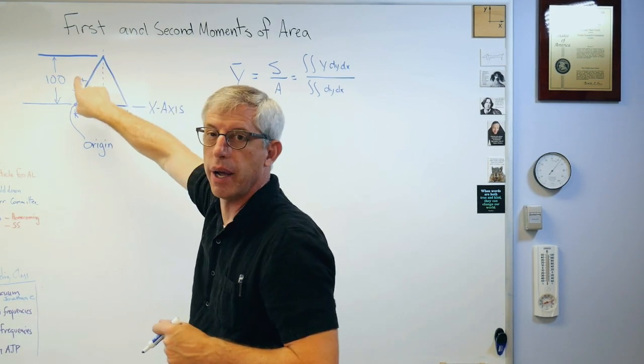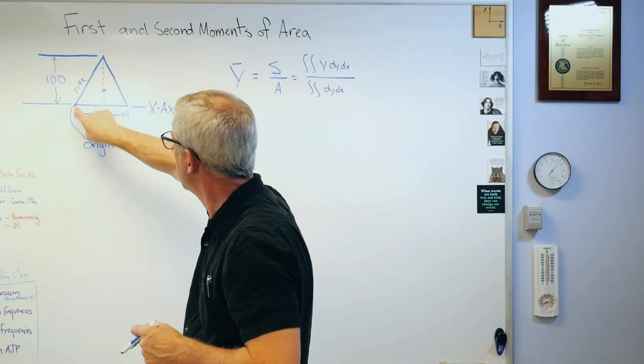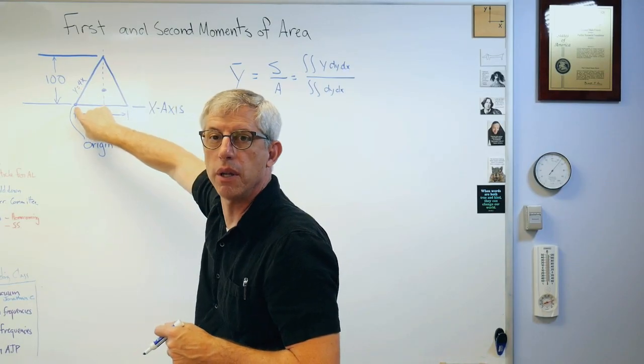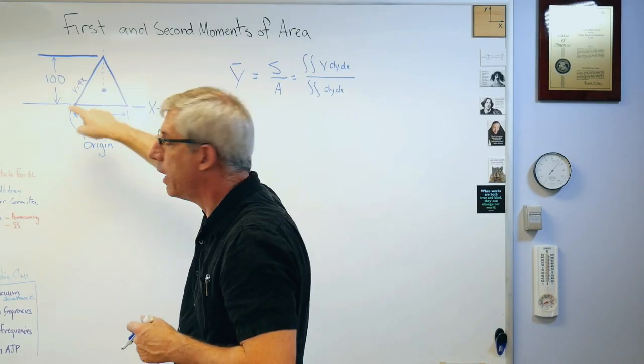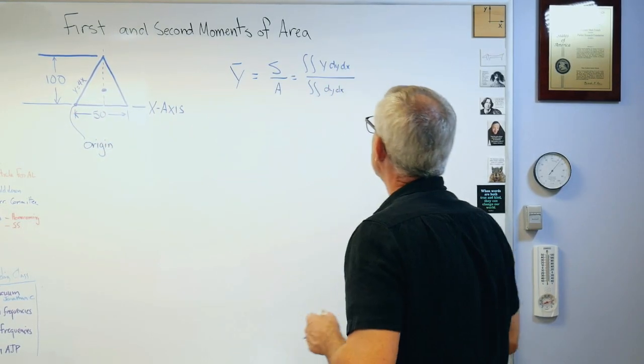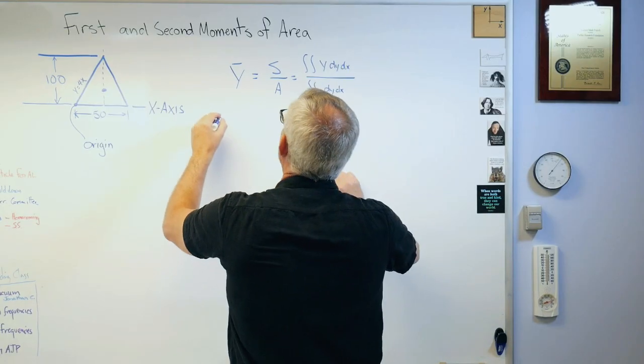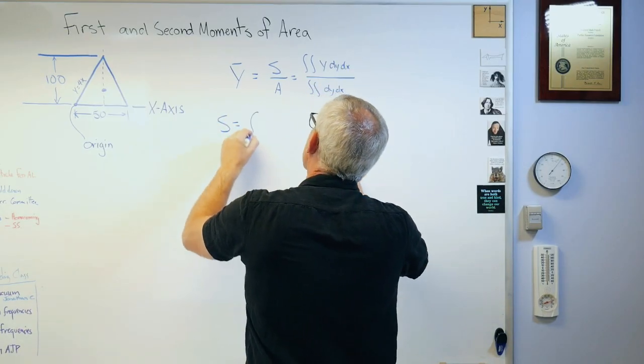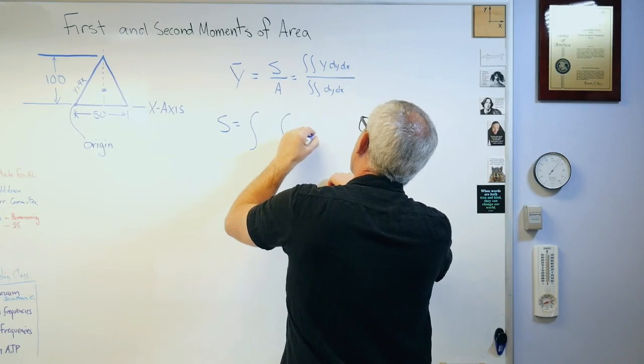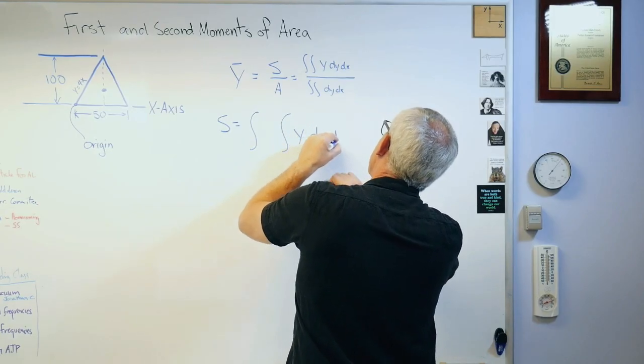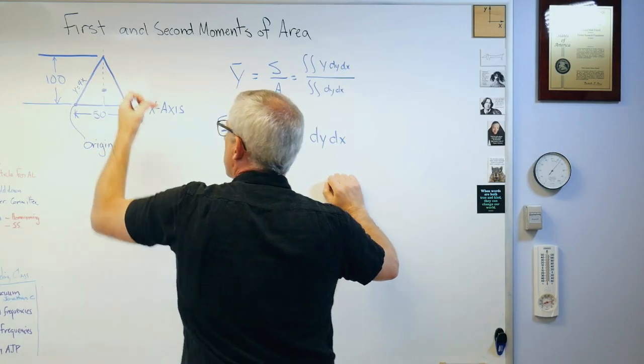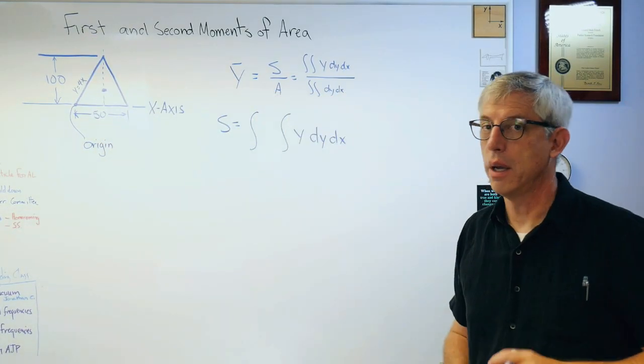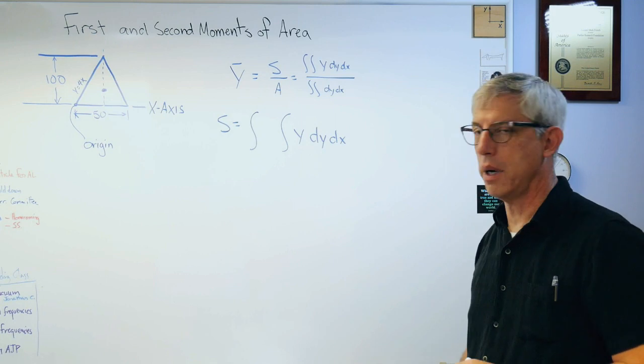The slope of that line there is 4x. And if I happen to call the origin that point right there, then the equation of that line really is just 4x. So here's what I'm going to do. I'm going to figure out s and I'm going to give myself plenty of room here. I'm going to do dy dx because I'm going to integrate up first and this way horizontal second.